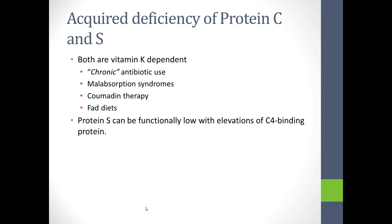Protein C and S, because they are vitamin K dependent, are frequently the root cause of acquired thrombosis. Acquired deficiency is common with chronic antibiotic use — and by chronic, this can mean two or three weeks of antibiotics. So if a child has had several bouts of tonsillitis and has been on antibiotics off and on for a couple of months, they are at risk.